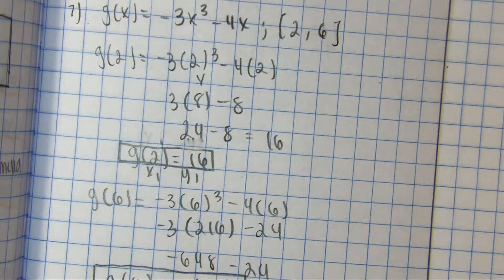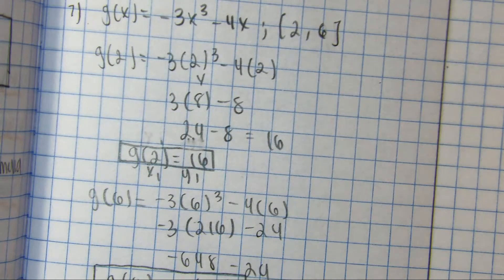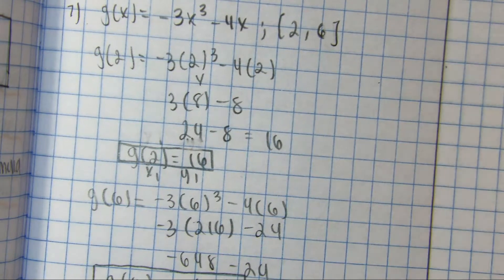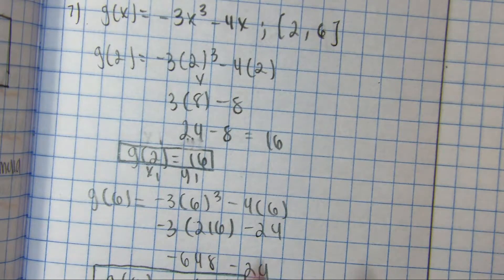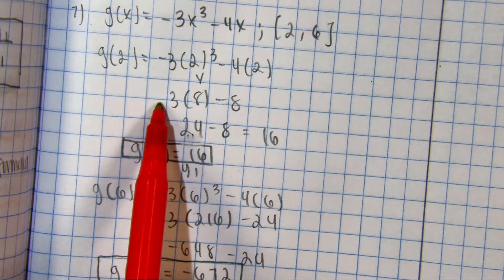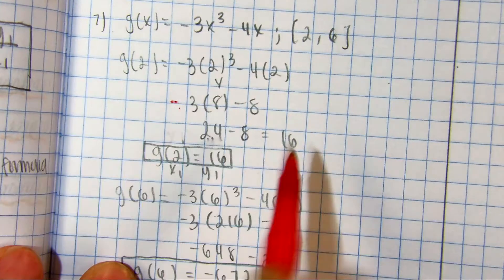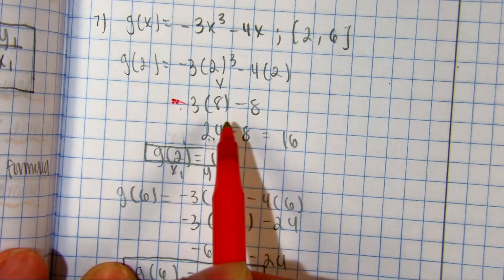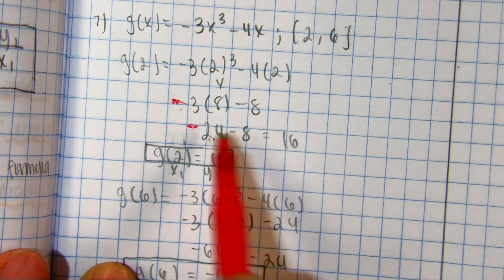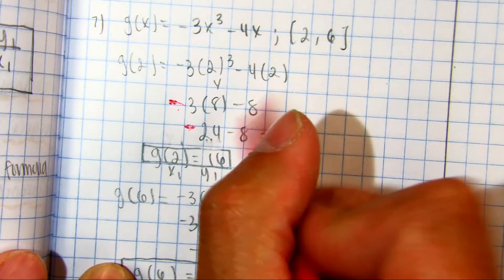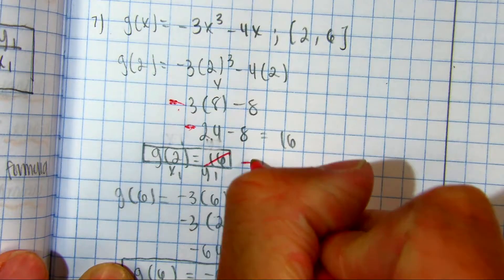Yes, Yen. Raise your hand if you saw that. So, negative 3 times 8 gives me a negative 24. Negative 24 minus 8 gives us a? Negative 32. Negative 32. Raise your hand if you got that.